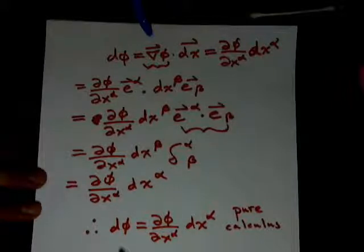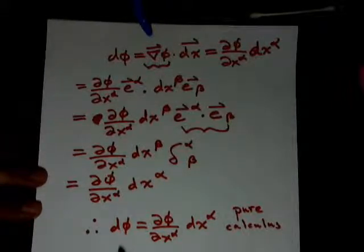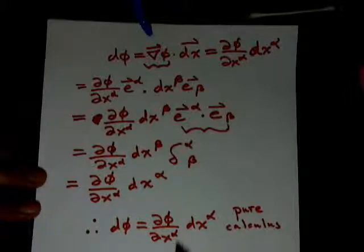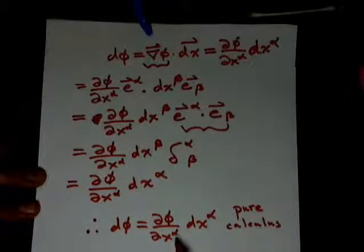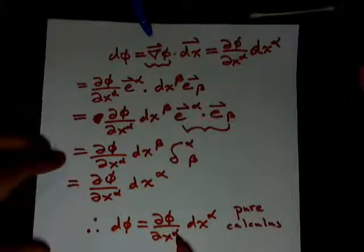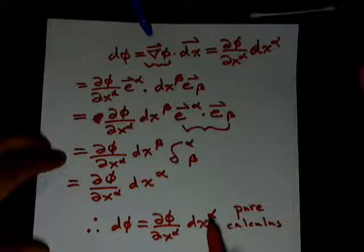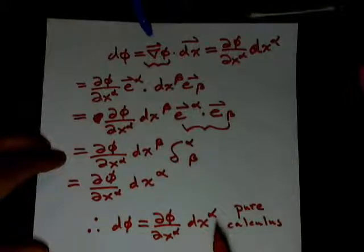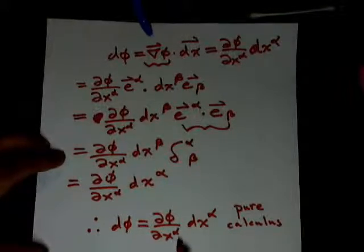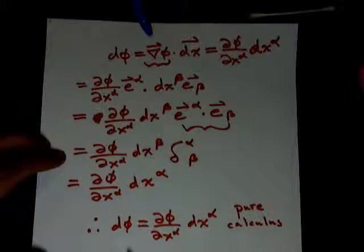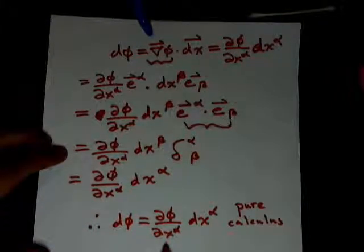And maybe I can show in another video how this would look with a real example. There is a summation here because we've got α as a lower index and α as an upper index, and it's an implied summation. This is known as the Einstein summation notation.